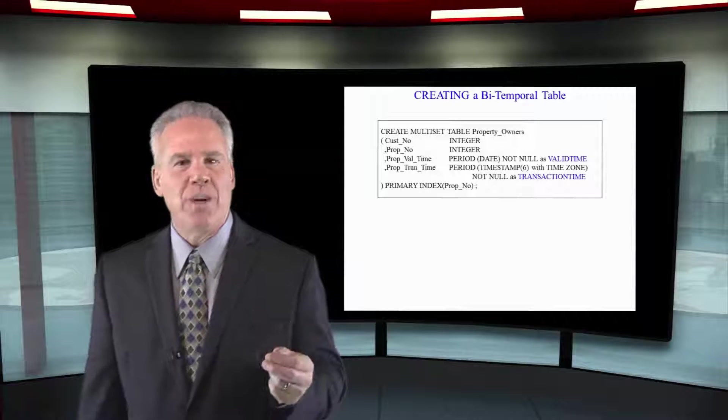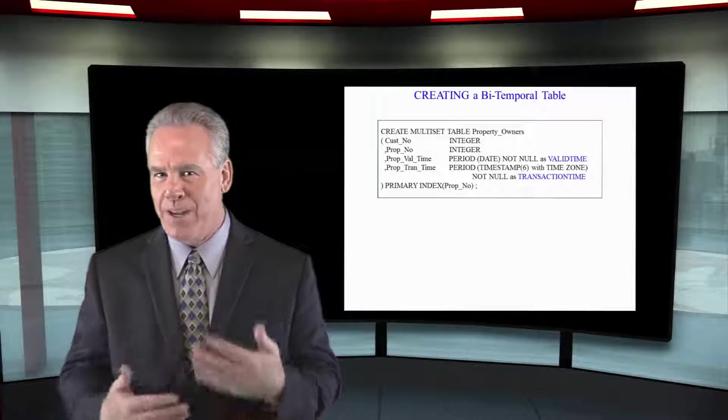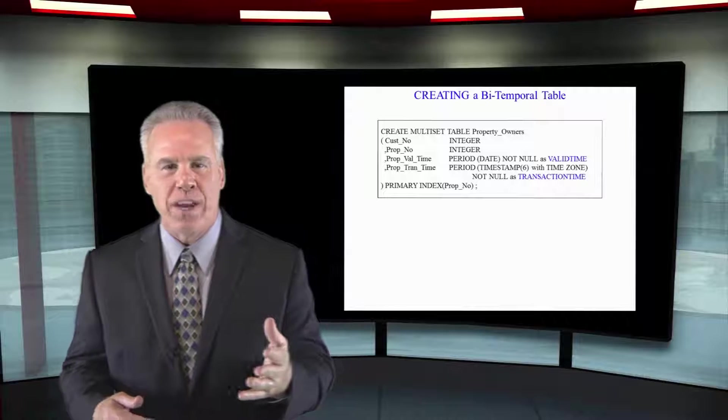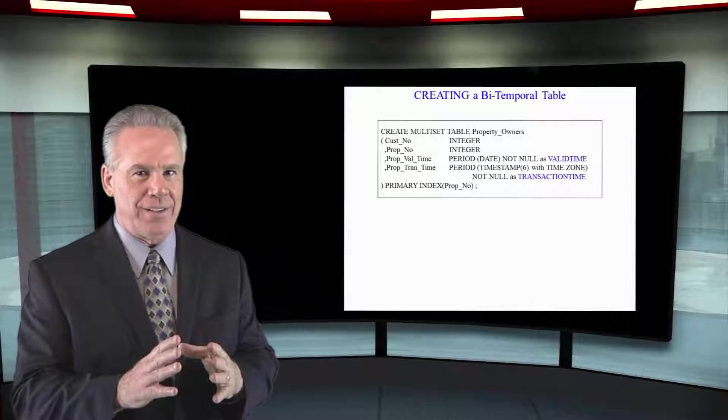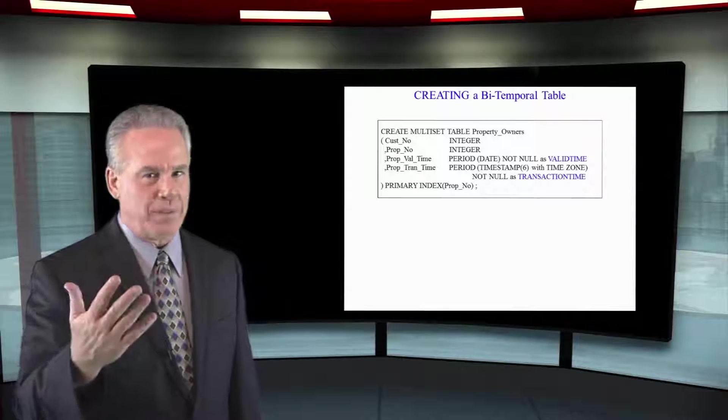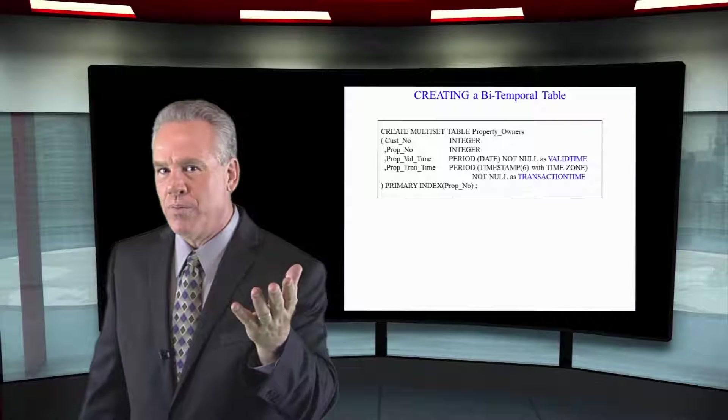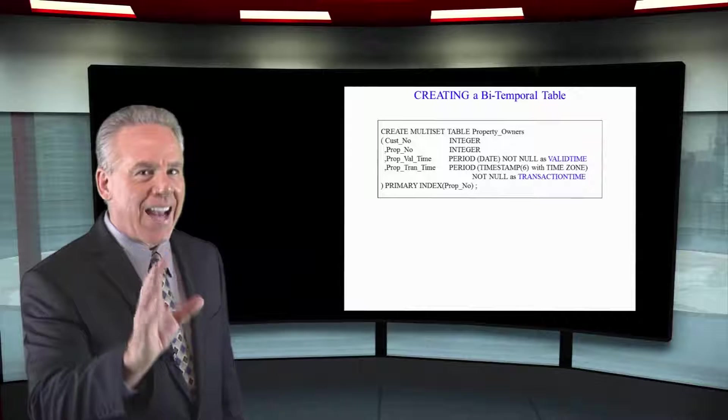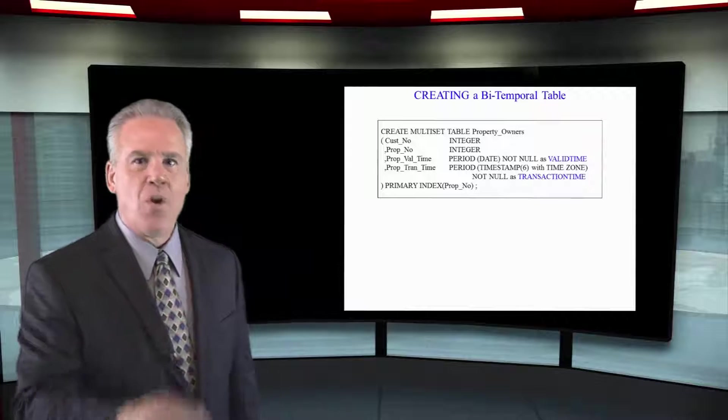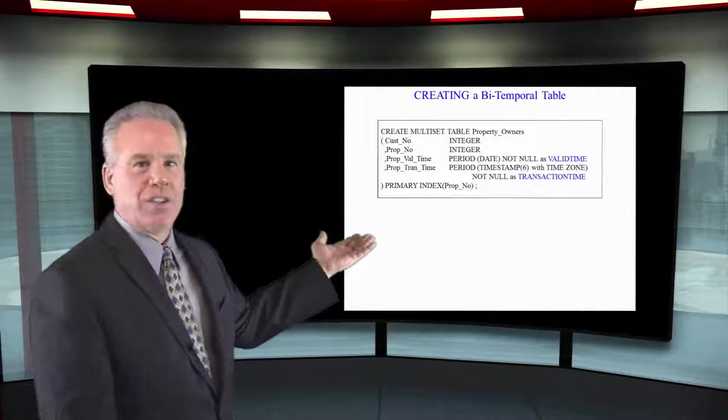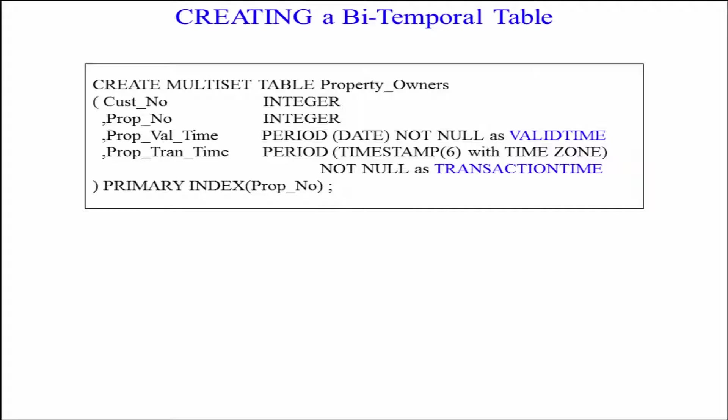This is how you might create a bi-temporal table. You see, temporal tables are time-based and there are three types of them. You can create a valid time temporal table, you can create a transaction time temporal table, or you can create bi-temporal, which has both valid time and transaction time.